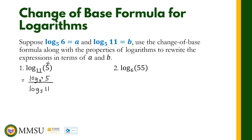We know that the logarithm of any number where the number and the base are the same — this is basic property of logarithms number 1 — is equal to 1. So the numerator is now equal to 1, and the denominator, the logarithm of 11 in base 5, is given as b. So our answer for number 1 is 1 over b.